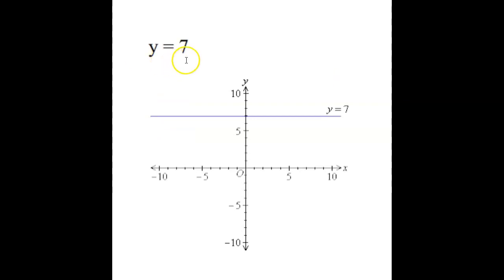the derivative of y equals any constant, any number, whether that's 7 or 437 or 9 million, the derivative of y equals any specific number is always going to be 0.